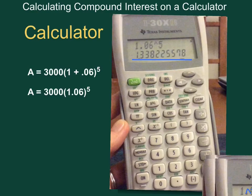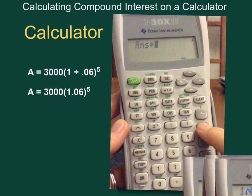Just leave it in your calculator. Now you're going to hit multiply because you're going to want to multiply by your 3,000, your principal. And here's your multiplication button right here.